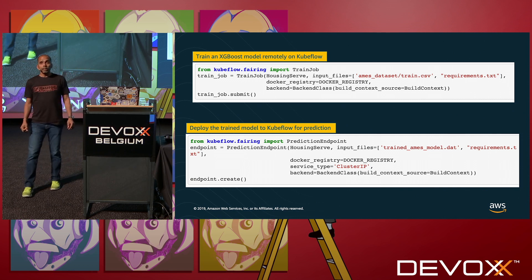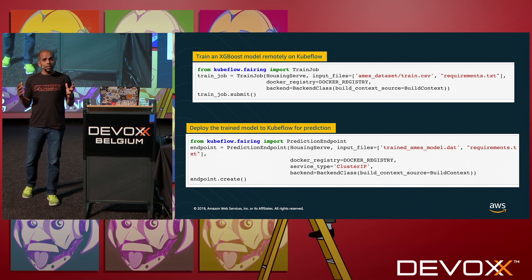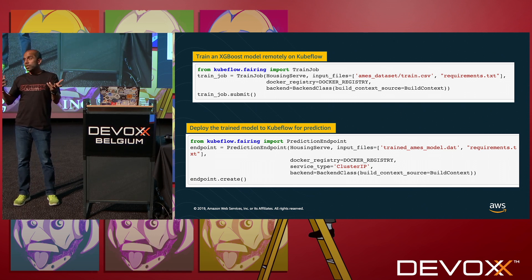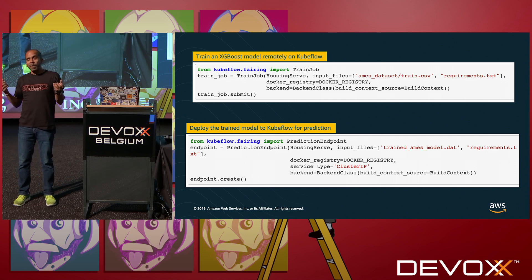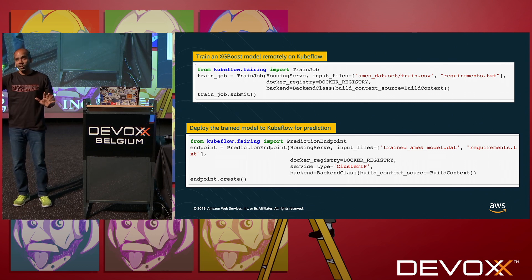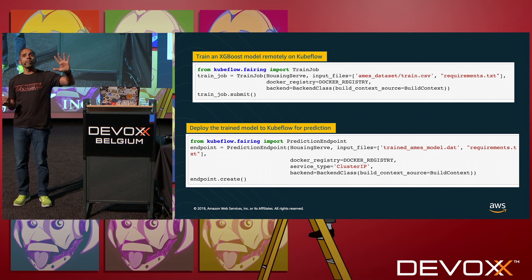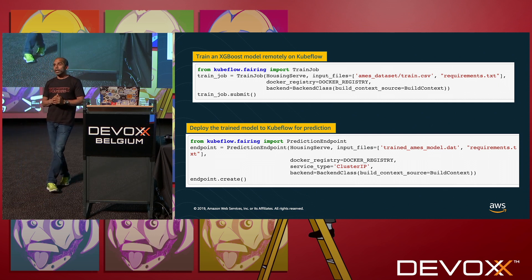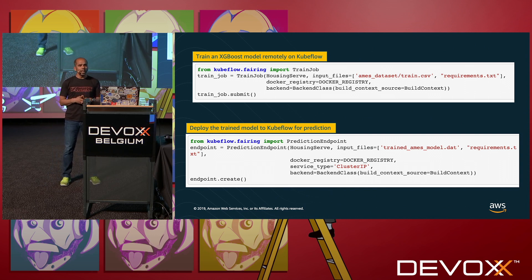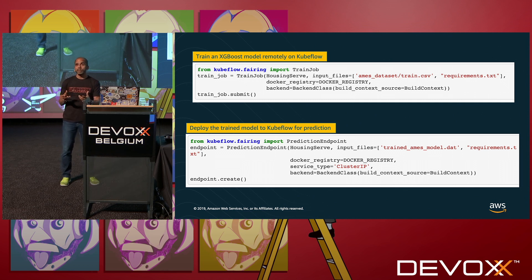When talking to customers, there is a data scientist and an ML engineer or ML ops team — just like dev and ops, there's always a question of whether data scientists should take the model into production or the ops team should. So that's where there's a back and forth about whether fairing is really meant for production and whether there should be tools around fairing to simplify taking a Kubeflow job into production.